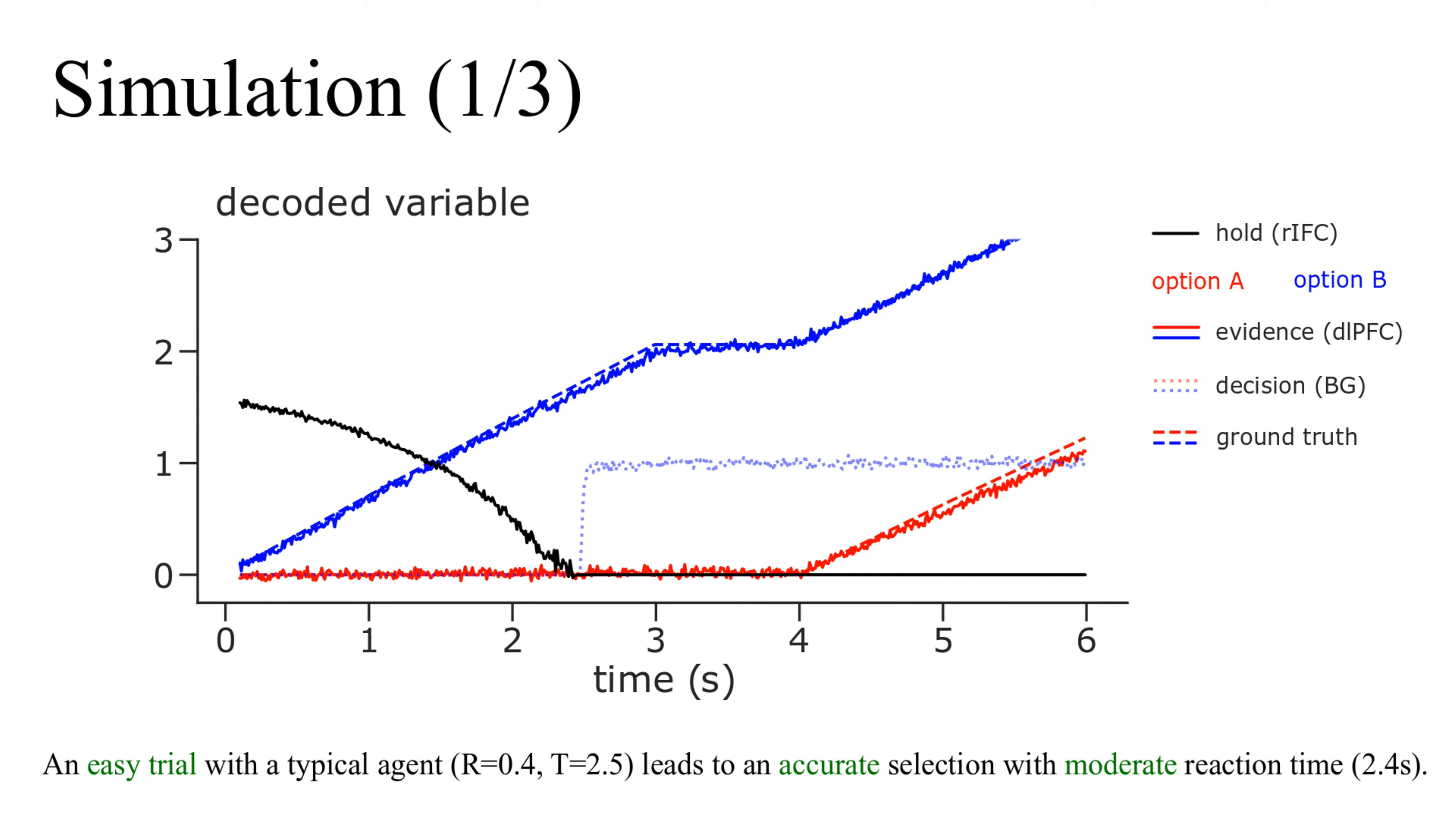Activity in IFC declines as the difference in evidence increases and as time passes, i.e. as uncertainty shrinks and urgency grows. When IFC activity reaches zero, disinhibition of PSMA opens the gate, and the basal ganglia network selects the best option. In this trial, the agent made the correct selection after 2.4 seconds.